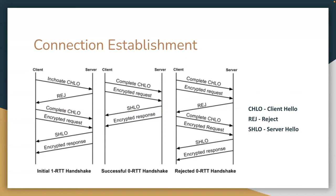After sending the complete CHLO, the client is in possession of the initial keys for the connection, since it can calculate the shared value from the server's long-term Diffie-Hellman public value and its own ephemeral Diffie-Hellman private key. At this point, the client is free to start sending application data to the server, and in fact it has to if it wants to take advantage of zero RTT latency, sending that data under the assumption the handshake is successful. Once the handshake is successful, the server returns a server hello — an SHLO message — encrypted using the initial keys and containing the server's ephemeral Diffie-Hellman public value.